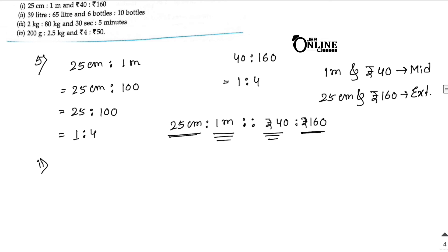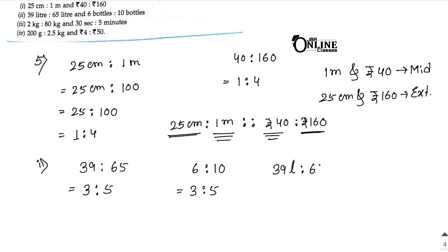Number 2: 39 is to 65 — divide by 13 — gives 3 is to 5. And 6 is to 10 — divide by 2 — also gives 3 is to 5. Both equal, so in proportion. Written as: 39 litres is to 65 litres :: 6 bottles is to 10 bottles. Middle terms are 65 litres and 6 bottles. Extreme terms are 39 litres and 10 bottles.